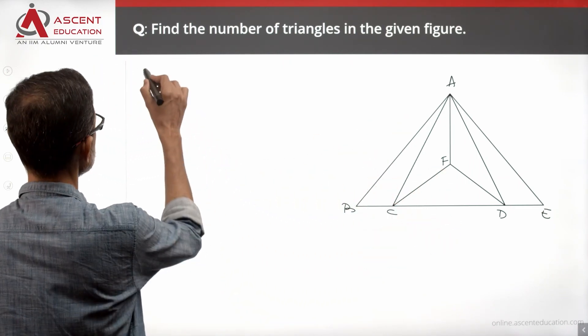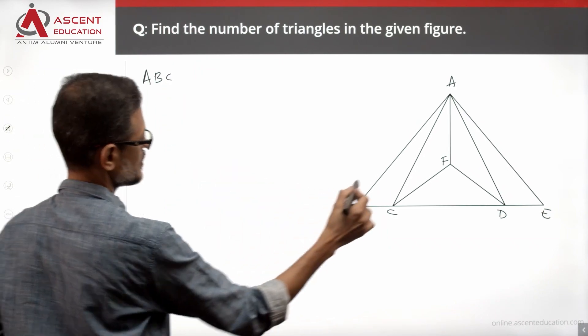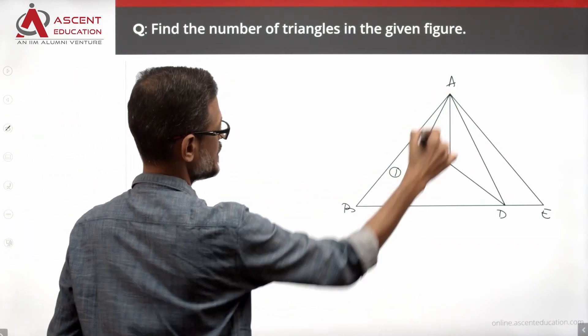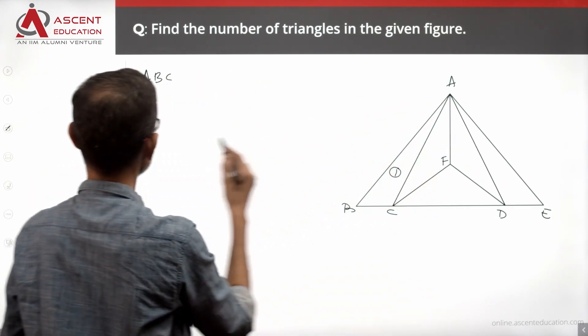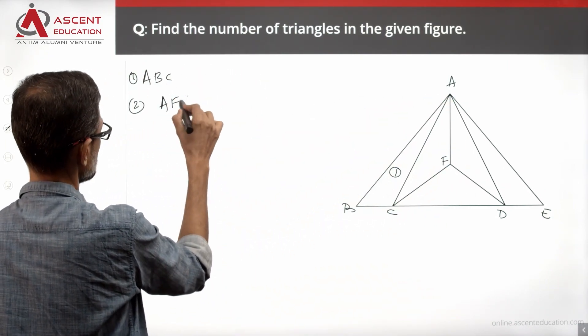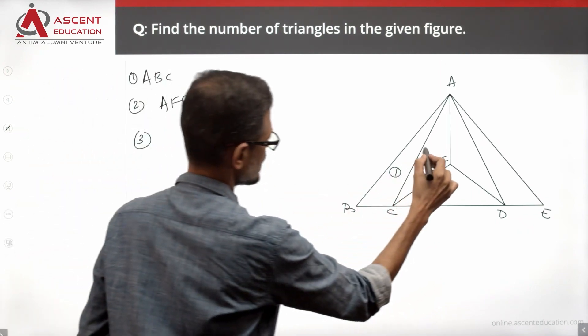Now, A, B, C is one triangle. This is triangle one. A, B, C is the first triangle. Second triangle: A, F, C is the second triangle. Third triangle: A, F, D.